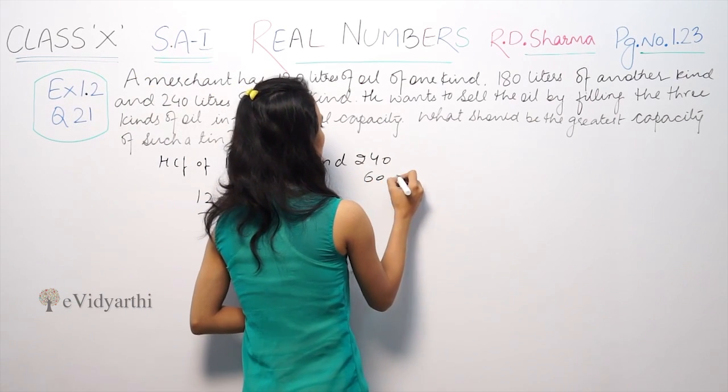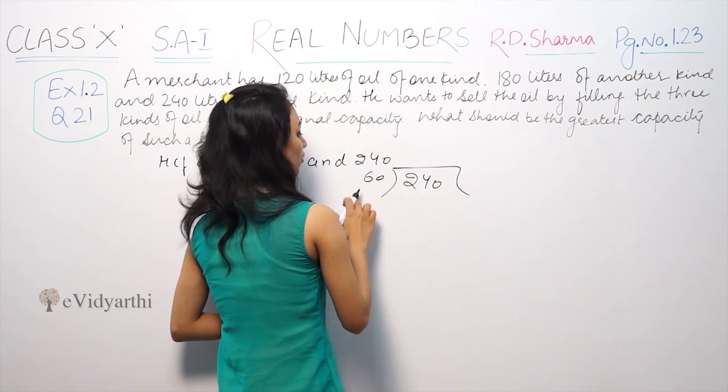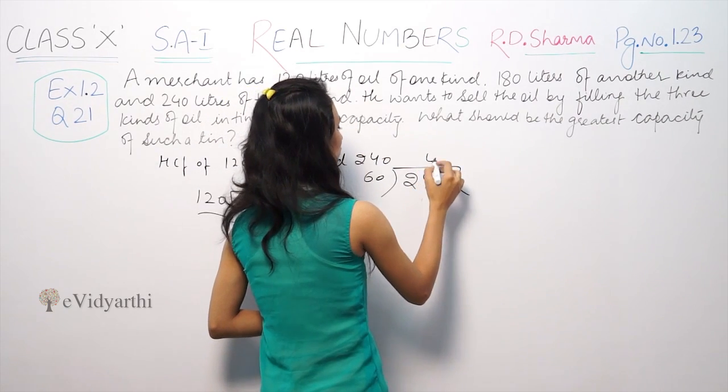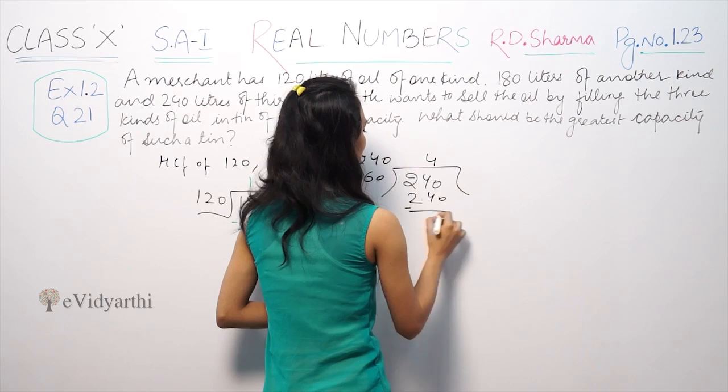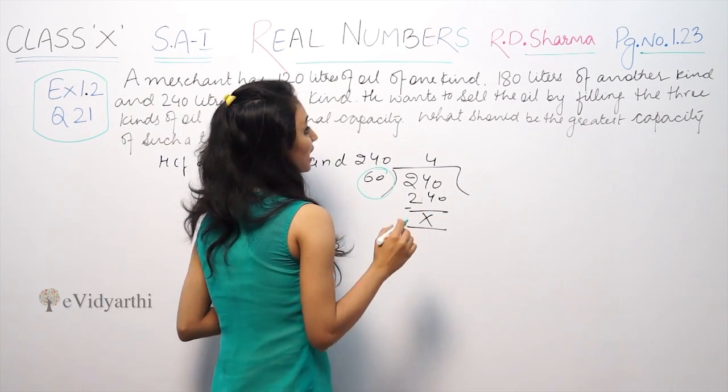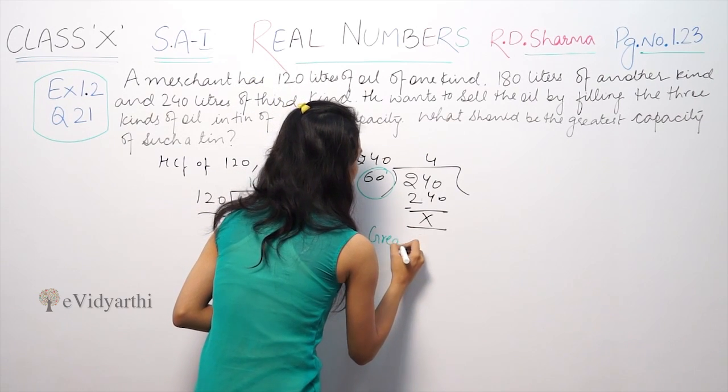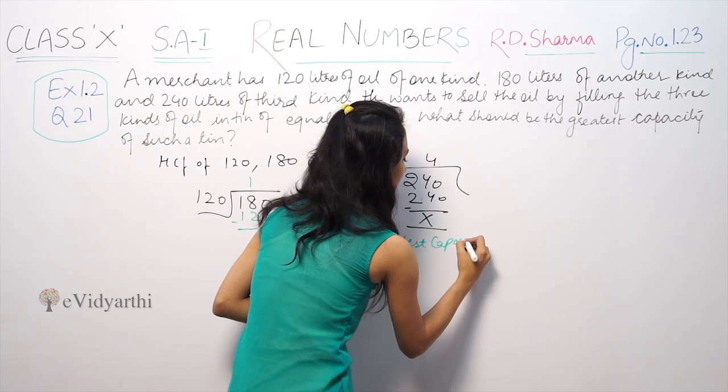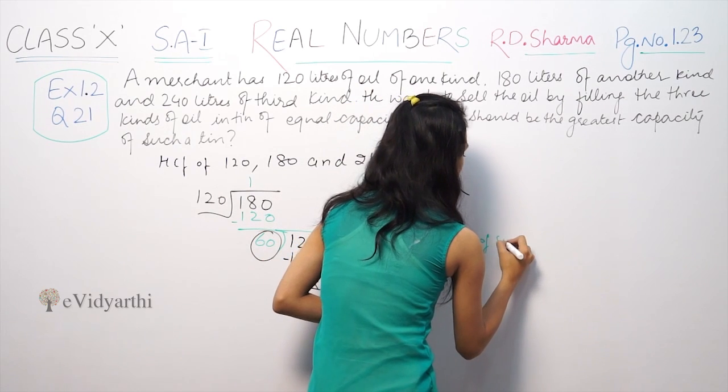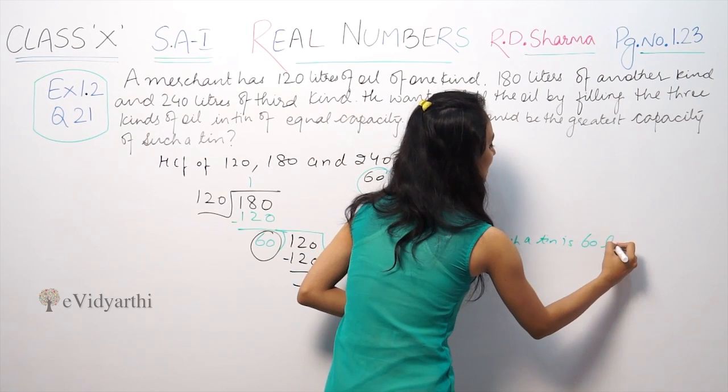Now, does 60 divide into 240? Yes, 60 times 4 equals 240. Therefore, the HCF is 60 liters. So the greatest capacity of such a tin is 60 liters.